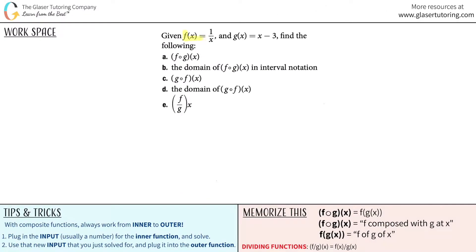Given f of x equals 1 over x and g of x equals x minus 3, we need to find the following — parts a through e.